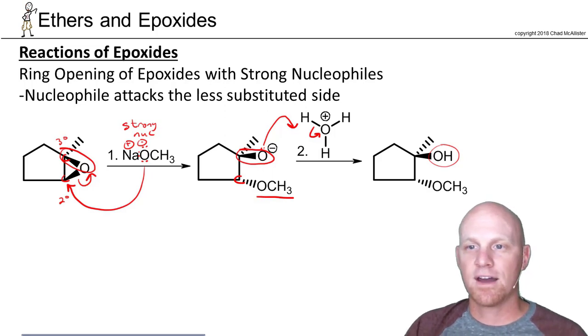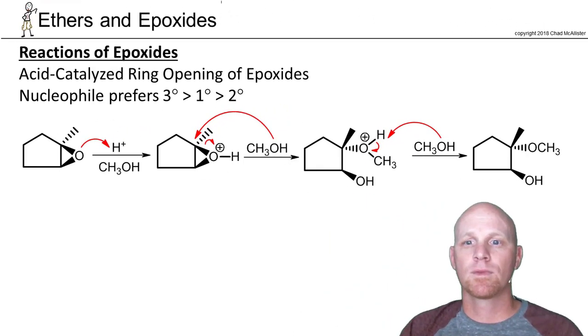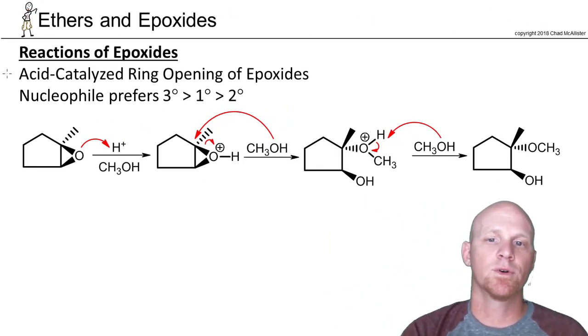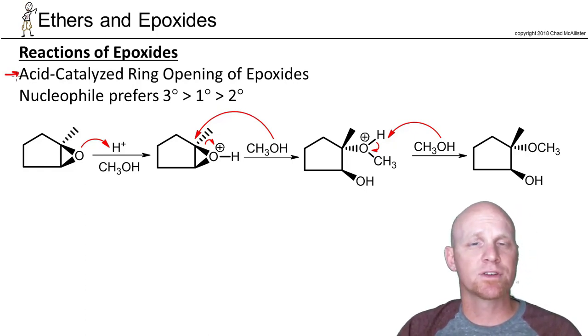That is the reaction of epoxide with a strong nucleophile, but it turns out the second set of conditions we can do is an acid-catalyzed version with a weak nucleophile as well. With a weak nucleophile we do acid-catalyzed ring opening of an epoxide. Generally we don't do this with strong nucleophiles because strong nucleophiles are often strong bases and wouldn't survive acid.